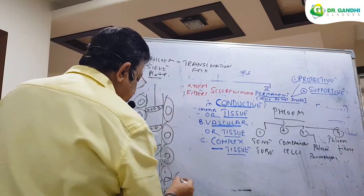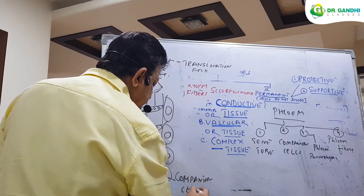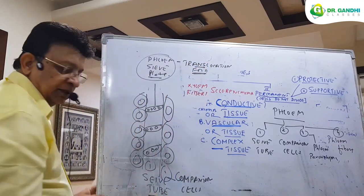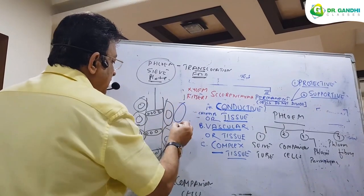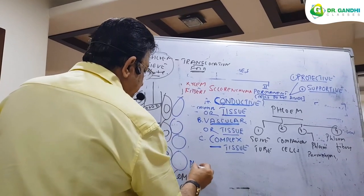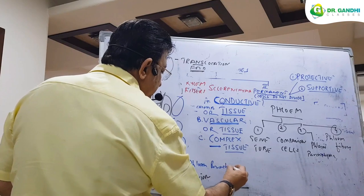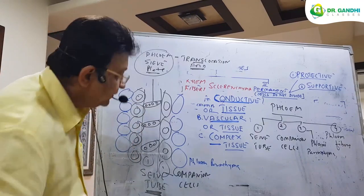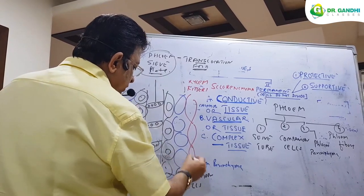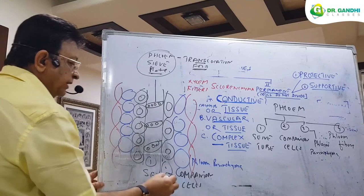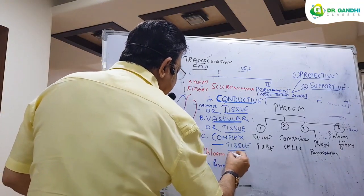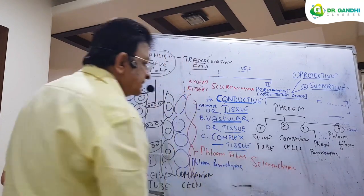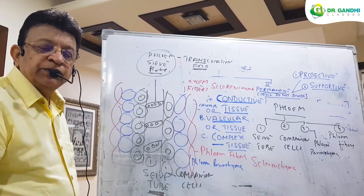When somebody helps you, you call them your companion — therefore these surrounding cells are known as companion cells. They help the sieve tube perform the function of translocation of food. Next to it you have large cells known as phloem parenchyma. And finally, on either side, as mechanical support, there are phloem fibers, which like xylem fibers are made up of sclerenchyma. That takes care of the study of the conductive tissues of the plant.